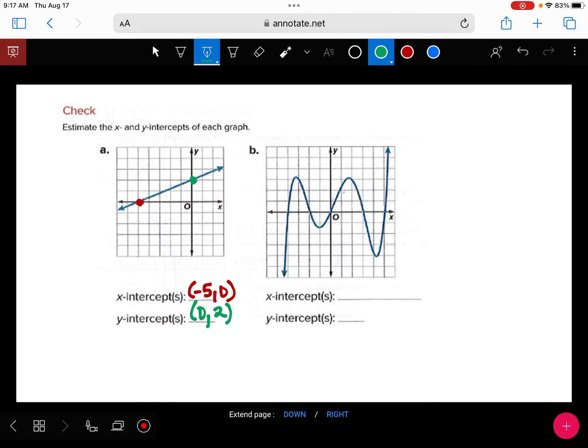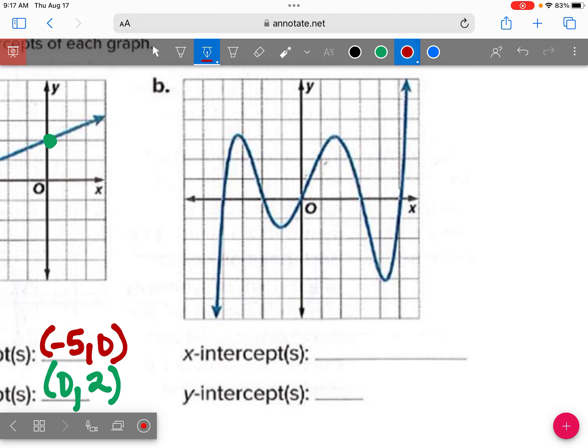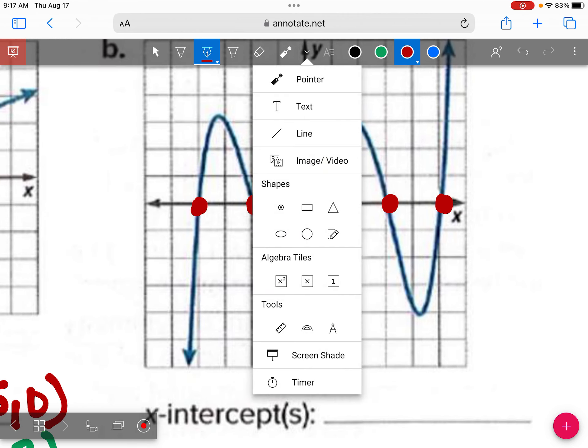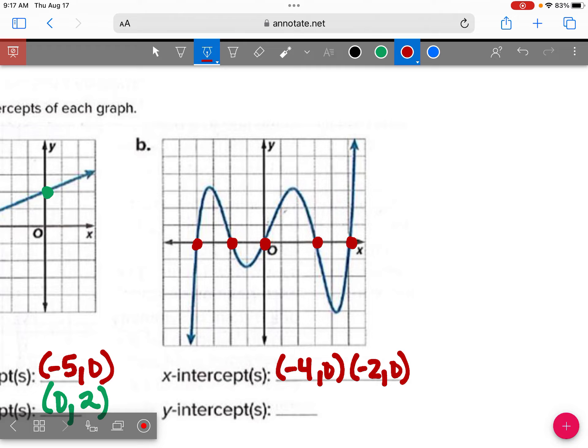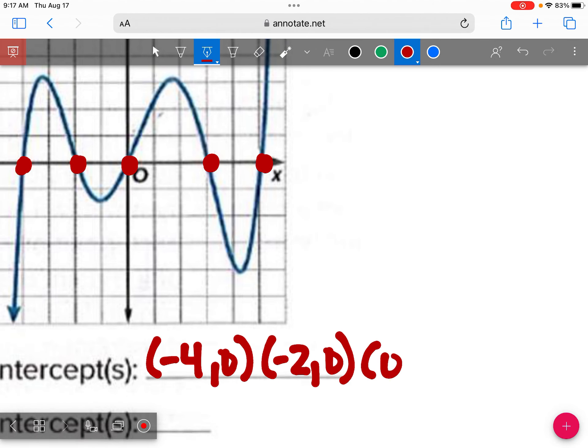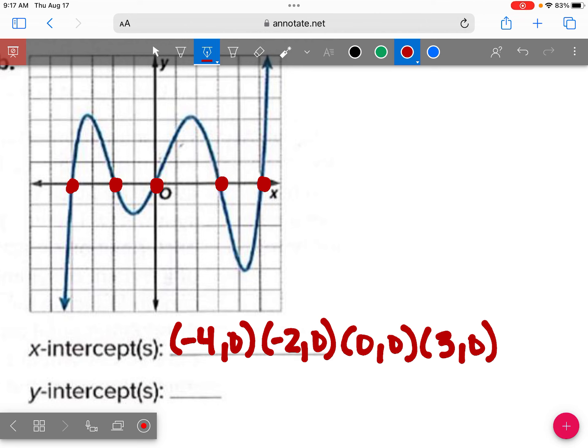And our last function has a lot of x-intercepts. So we got one here, 2, 3, 4, 5. There's 5 different x-intercepts. So I usually start from the furthest to the left. So this is negative 1, negative 2, negative 3. So negative 4, negative 2. So negative 4, negative 2, 0. And then what would you say for this point right here? 3, and then the last one was where? 5. Good job.